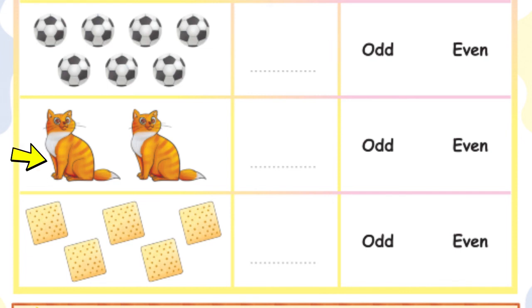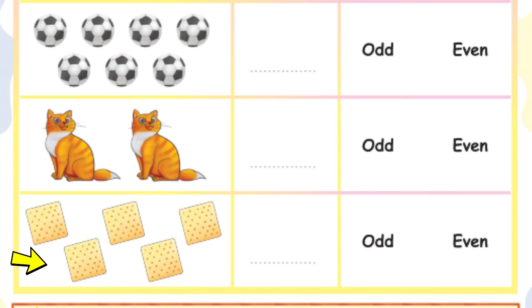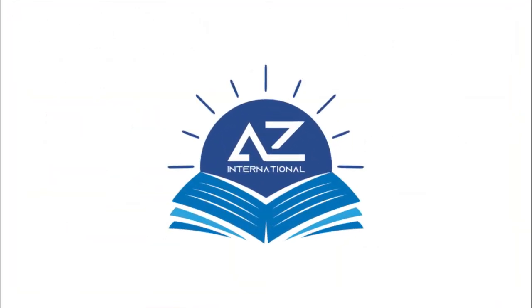What about the two cats? Two is an even number. What about the biscuits? One, two, three, four, five. Five is an odd number.